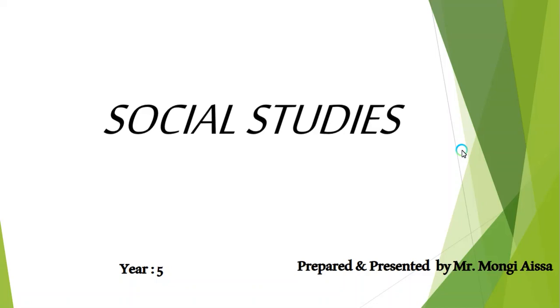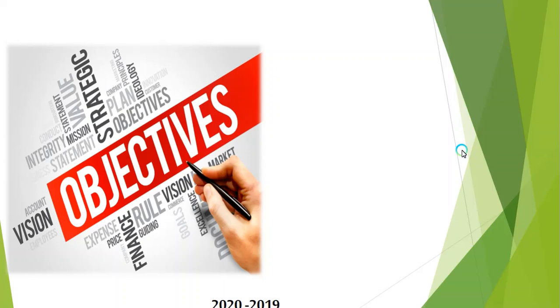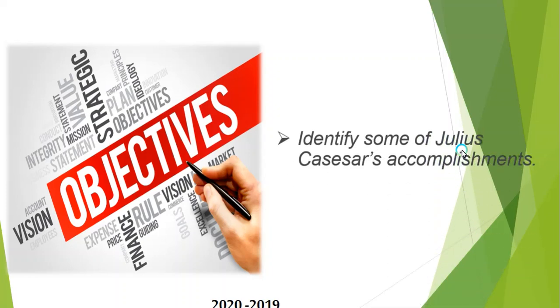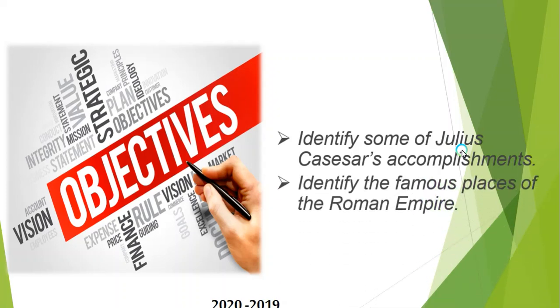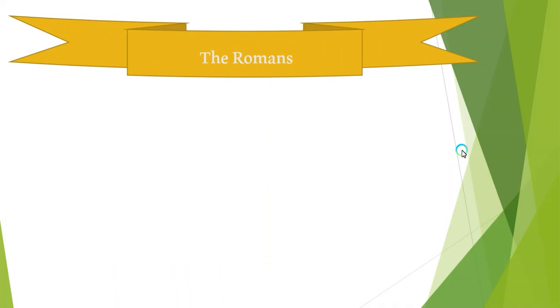I'm your science and social studies teacher. Today I'm going to study social studies for grade five. First, I'll introduce our lesson with our objectives. Our lesson is Lesson Two: The Romans, from page 134 to page 137. Our objectives are: first, identify some of Julius Caesar's accomplishments; second, identify the famous places of the Roman Empire; and third, describe the life during the time of the Roman Empire.